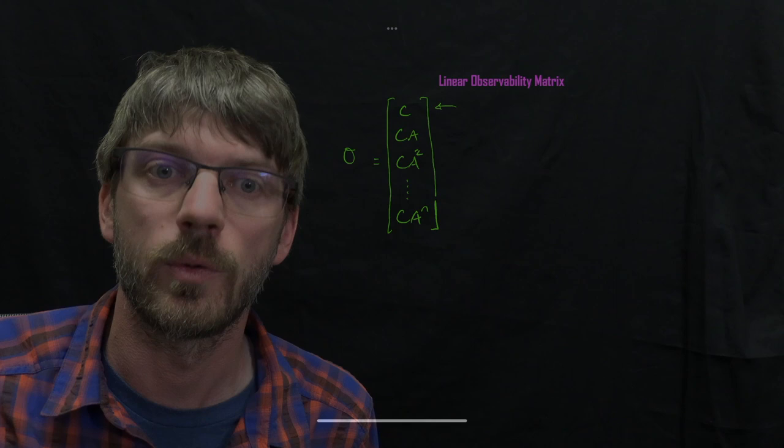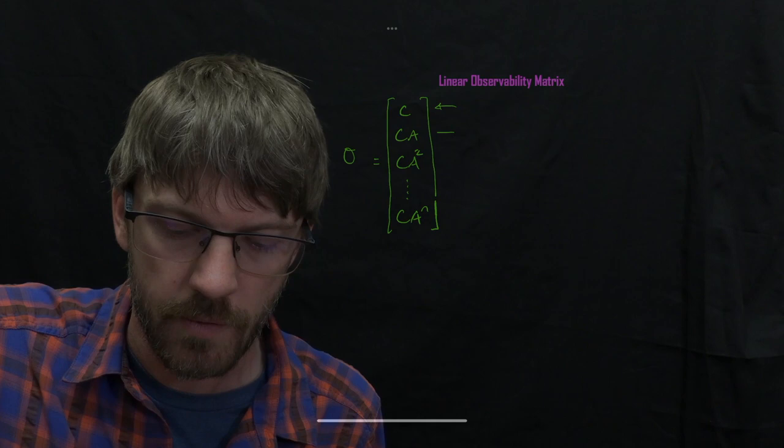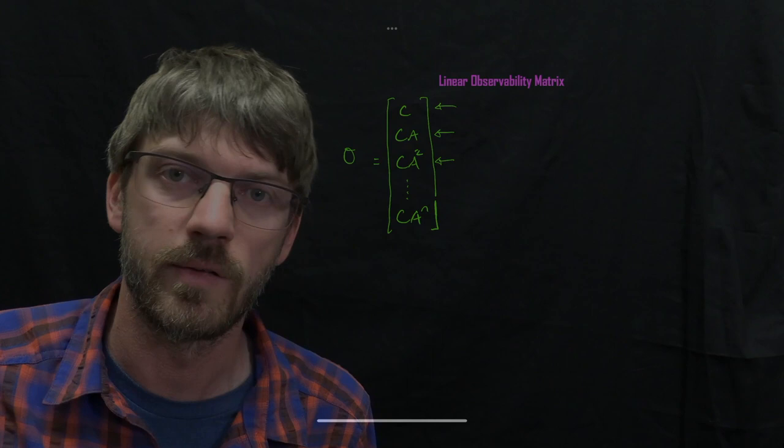So just to recap, this first row here, or the first several rows depending on how large C is, those are going to be your measurements. The second set of rows here is going to be the derivative of those measurements, the third set is the second derivative, and so on. So that observability matrix, it has a shape where the columns here correspond to all the states in your system, and the rows here correspond to all of the measurements and their derivatives.